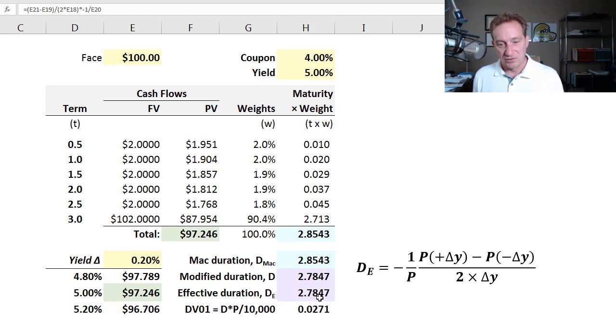And so that's great. We can use either the 2.785 years. We can use either for purposes of estimating yield, a parallel shock to the yield curve on our bond's price. But it's fine to use the effective duration.